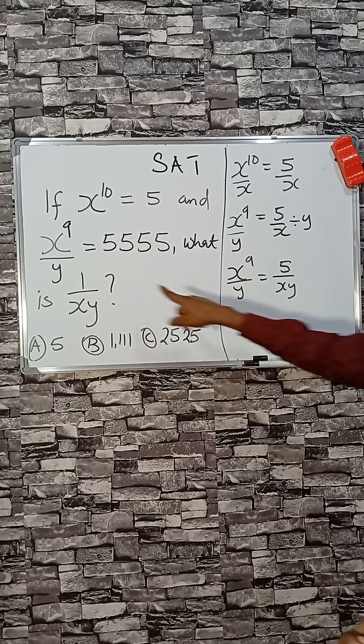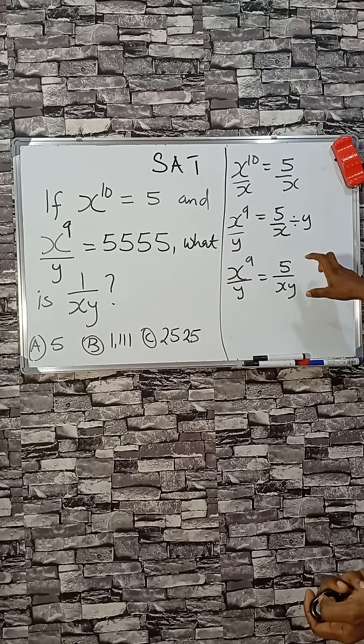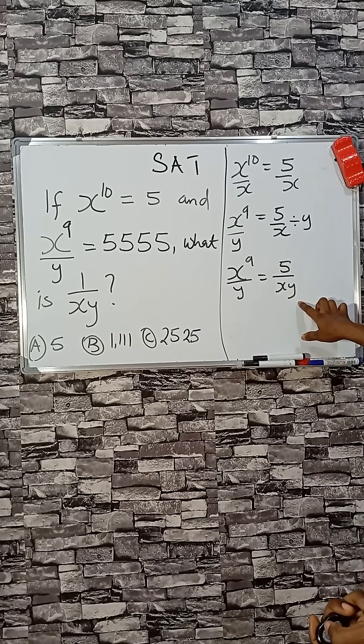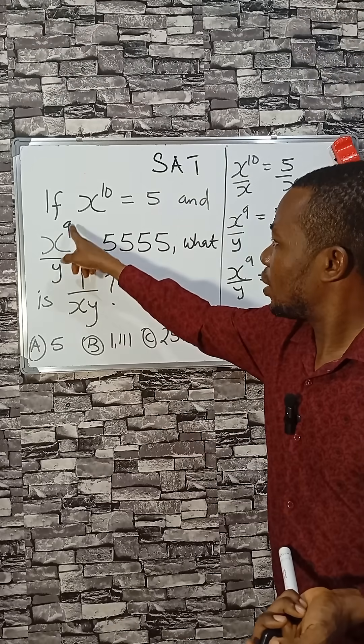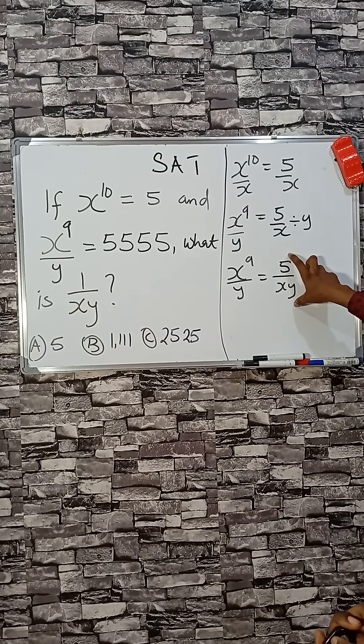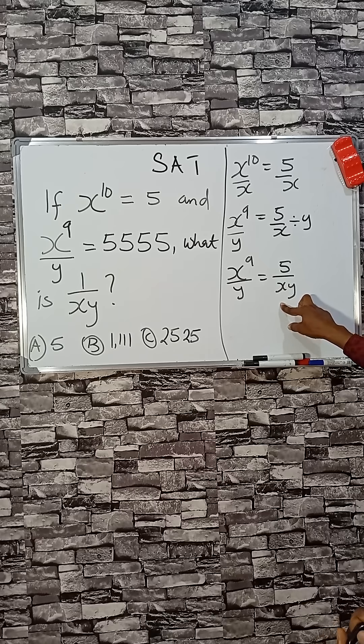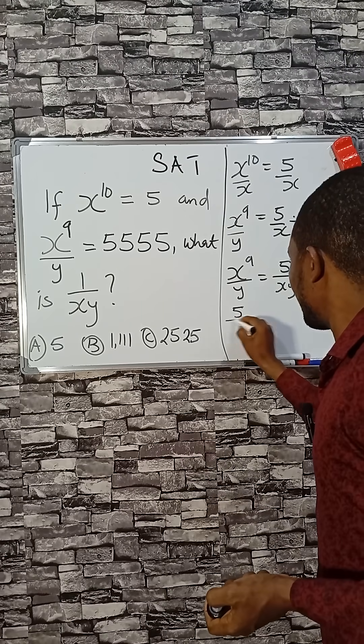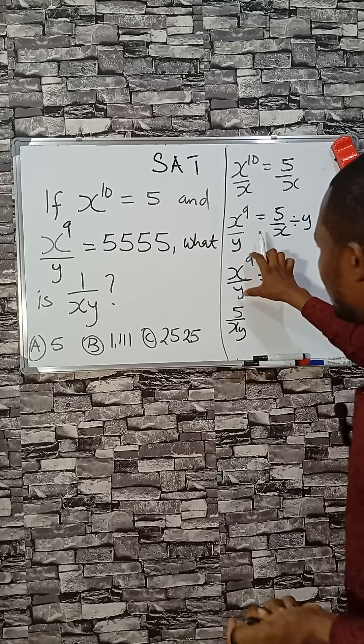Now I have x to the 9 divided by y, just like what is given here, then to be equal to 5 divided by xy. So in the place of x to the 9 divided by y, if I put 5 divided by xy, am I wrong? No, I'm not. So 5 divided by xy, which is equal to this.